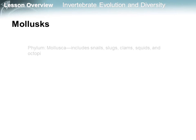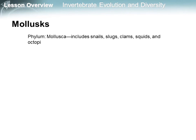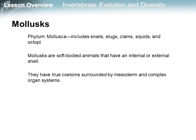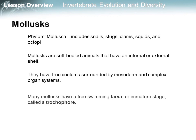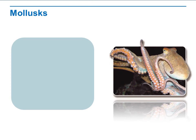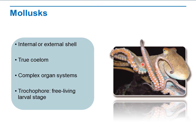Now let's see the mollusks. They belong to phylum Mollusca, which includes snails, slugs, clams, squids, and octopi. Mollusks are soft-bodied animals that have an internal or external shell. They have true coeloms surrounded by mesoderm and complex organ systems. Many mollusks have a free-swimming larva or immature state called the trochophore. They have internal or external shells for protection, a true coelom, complex organ systems, and a free-living larval stage.